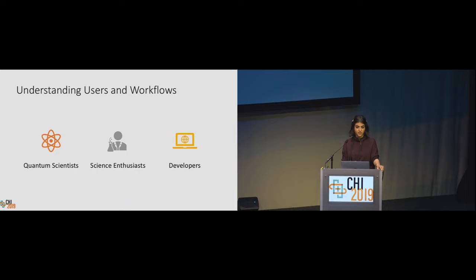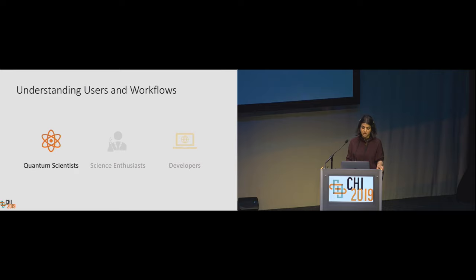Designing effective technologies for programming quantum systems requires understanding the different types of people who will use those systems. Our quantum development team conducted early-stage user research and identified three quantum users: quantum scientists, science enthusiasts, and developers. Our first group, quantum scientists, include professors, post-docs, and graduate students in physics and quantum information science. They perform experiments using quantum simulators on real quantum computers.